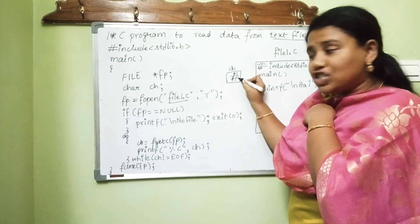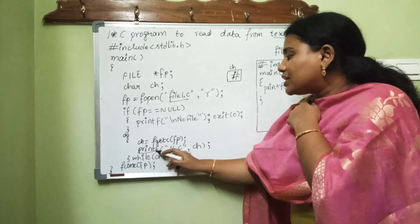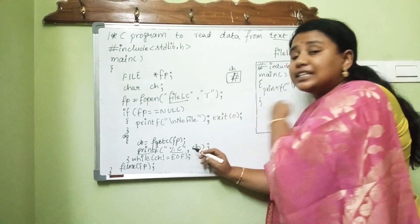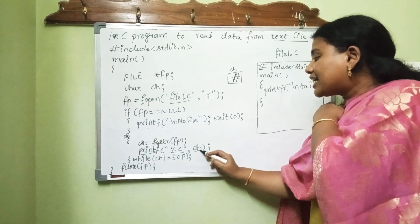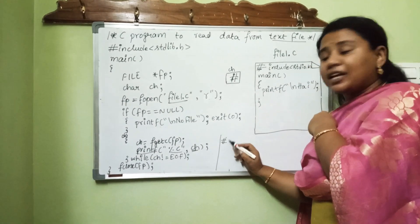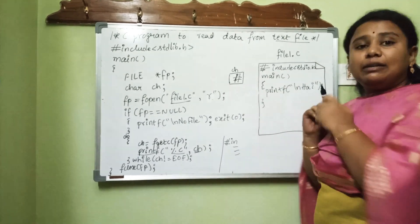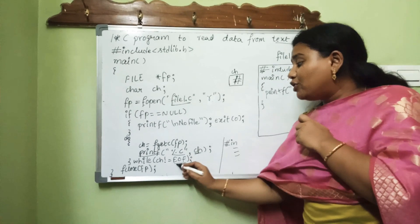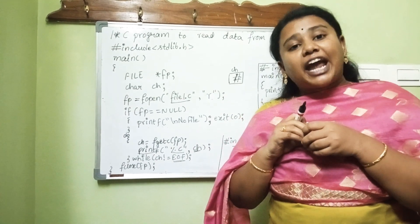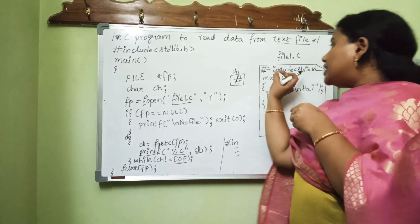We get the character pointed to by fp — the first character is the hash symbol — and place it in the variable ch. Then using the printf statement with the format specifier %c, that character is printed on the output screen. So the hash will be printed, then 'i', then 'n', and so on. This continues until we reach the end of the file. EOF stands for end of file.